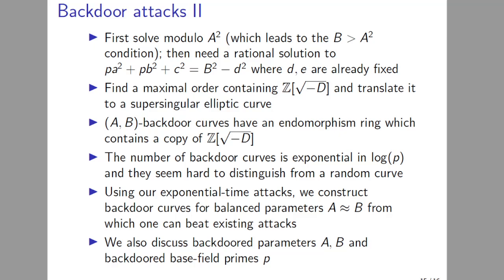Again, the condition that B has to be bigger than A^2 applies to polynomial-time attacks. You can look at special backdoor curves for which you don't have a polynomial-time attack, but you have an exponential-time attack which is still better than generic attacks. The result there is that even for balanced parameters, you can construct backdoor curves for which you can beat existing attacks. We also discuss other backdoor issues in the paper, such as backdoor parameters A and B, and backdoored base-field primes p, which I won't be discussing in this talk.